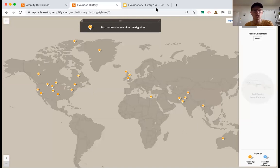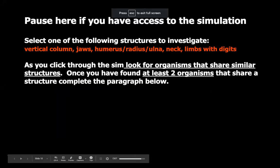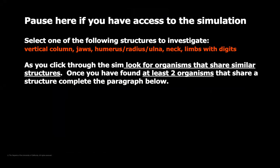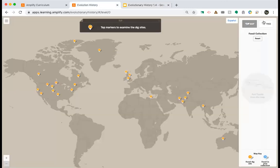For those of you working independently at home, I'm going to show you the slide you'll want to pause on. This is the main question you're going to want to explore. We've started to talk about different types of structures, and in the simulation you're going to find some of these different structures and see if you can look for different organisms that share similar structures. Once you've found at least two organisms that share a structure, you're going to describe that using our new vocabulary — writing out this paragraph here and filling in the blanks from the word bank.